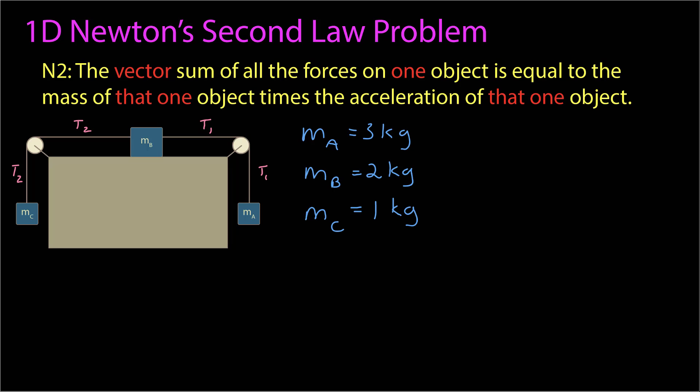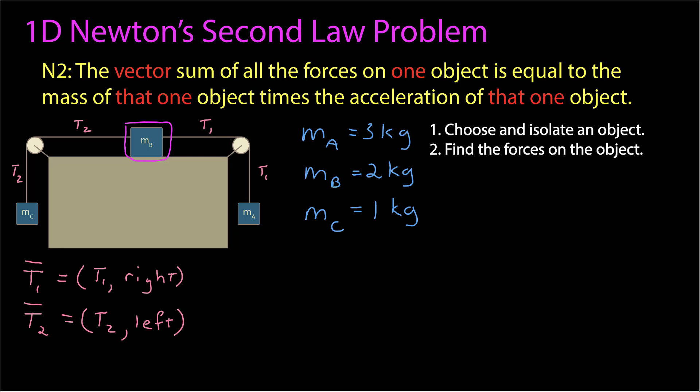The first step is: what sort of physics can I apply? I'm going to apply Newton's second law to this problem, which means I have to start by choosing a single object and then isolate that object. Since I want to know the acceleration of mass b, I'm going to start with that one. The forces on mass b are a tension force to the right due to tension 1, and a tension force to the left due to tension 2.